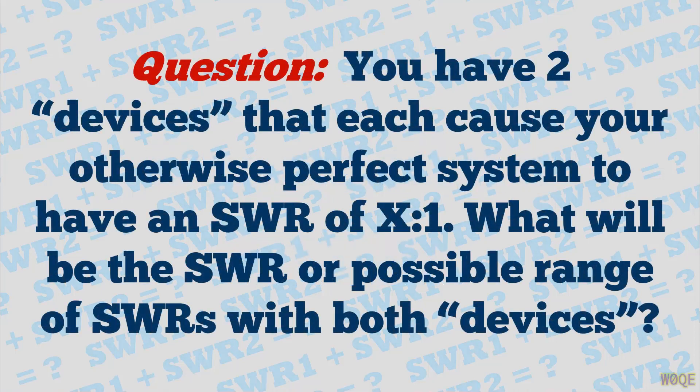You have two devices that each cause your otherwise perfect system to have an SWR of X to 1. What will be the SWR, or possible range of SWRs, with both devices in the circuit? This is a question that we can use SimSmith to answer very easily, and it's kind of fun to do so.